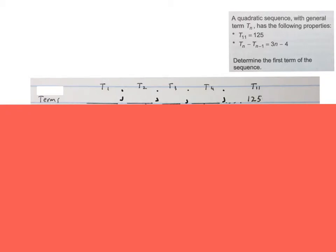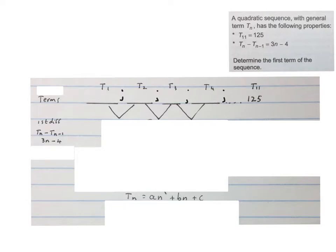They told us that it is a quadratic sequence with a general term Tn. This is the general term of a quadratic sequence. They also told us that the formula of the first difference is 3n minus 4. So we also have a formula to help us in this row. In a quadratic pattern, we usually go term 2 minus term 1, term 3 minus term 2, term 4 minus term 3, to get the sequence of the first differences. They told us this first difference Tn minus Tn minus 1 is 3n minus 4.